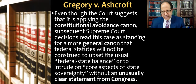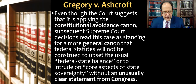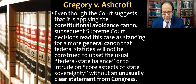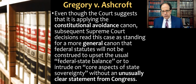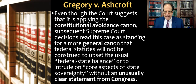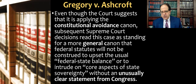Here's a bit about the aftermath of this case. The court in Gregory v. Ashcroft says it's applying the constitutional avoidance canon. But subsequent Supreme Court decisions and most law professors read this case as standing for a more general canon: that federal statutes will not be construed to upset the usual federal-state balance or intrude on core aspects of state sovereignty without a really explicit or clear statement from Congress. These are somewhat different things — instead of just interpreting the statute so there's no constitutional question, the court is saying if Congress is going to do this, it needs to spell it out.